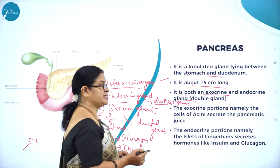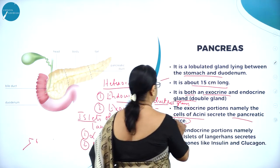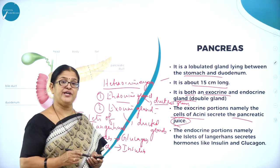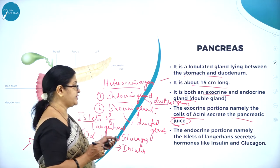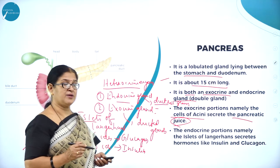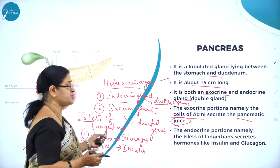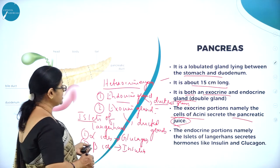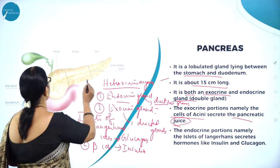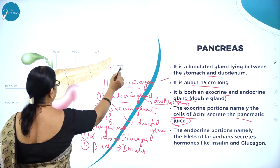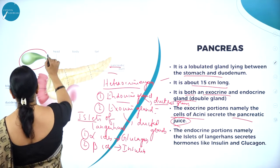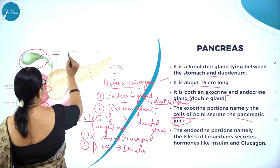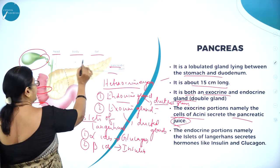The exocrine portion — the cells of acini — secretes the pancreatic juice, which is very important in the process of digestion of proteins. The endocrine portion — the islets of Langerhans — secretes hormones. Islets of Langerhans produces alpha cells and beta cells. Alpha cells produce glucagon and beta cells produce insulin. Looking at the diagram, you can see the pancreatic duct, the gallbladder, the first part of the duodenum, the bile duct, and the pancreas is divided into head, body, and tail.